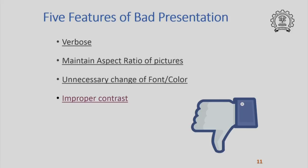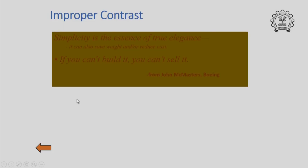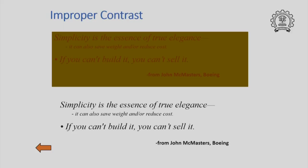One more mistake that many people make is to forget about the contrast and bring in images or backgrounds with text that can actually be unreadable. Look for example at a quote from John McMasters of Boeing — the use of a pink color on a yellowish background. It is so difficult to read. Whereas the same information projected in pure black and white is far more pleasing to the eyes and much easier to understand. So we should avoid such improper contrast in the presentation.